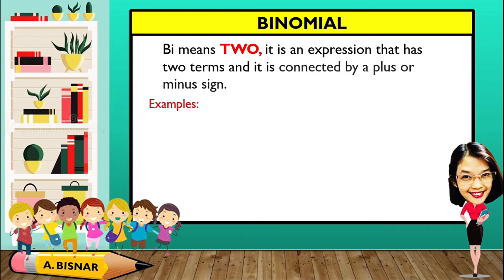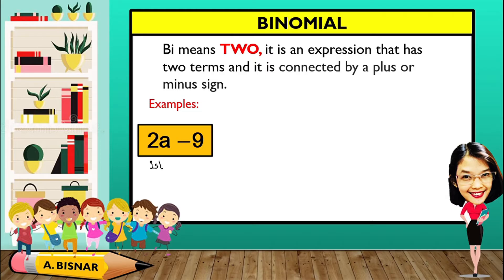Let us now illustrate binomial. Bi means 2. It is an expression that has two terms connected by a plus or minus sign. For example, 2a minus 9: we have 2a as the first term and 9 as the second term, connected by a minus sign. Therefore, this is considered a binomial.